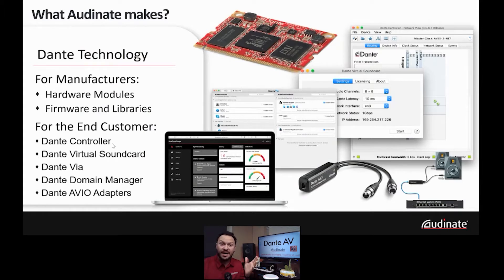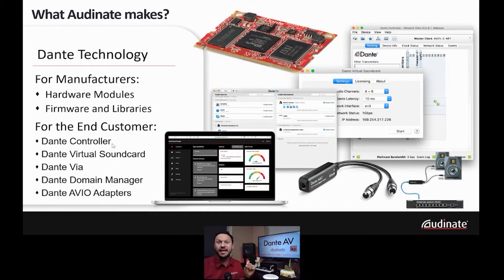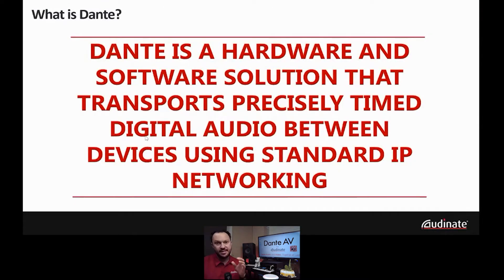If you want to know more, I invite you to the complete Dante certification. There will be a poll today asking what level of Dante certified you are. Level one is the basics; level two covers intermediate concepts like redundancy and presets; level three covers mixed networks. If interested, join us at audinate.com/certify — that's the portal for the certification program. In one sentence: Dante is hardware and software that transports precisely timed digital audio between devices on a standard IP network.